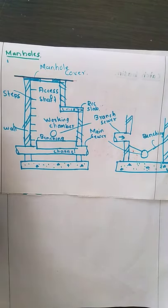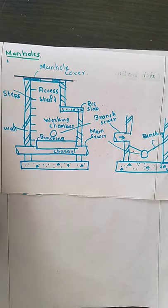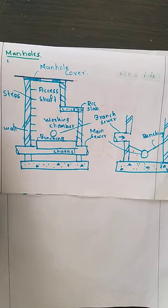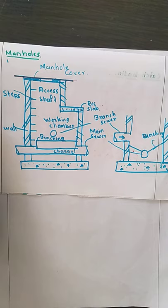Manholes are provided wherever there is a bend, wherever there is a junction where 2 to 3 or several pipelines meet, and wherever there is a change in gradient or change in diameter of the pipe. They are particularly meant for maintenance, cleaning, testing, and the removal of obstructions in the sewer.